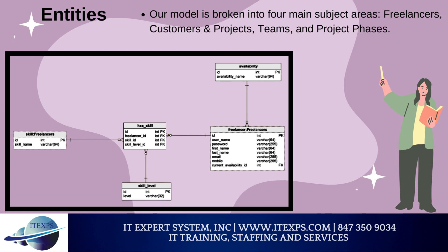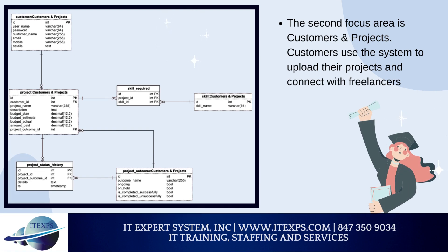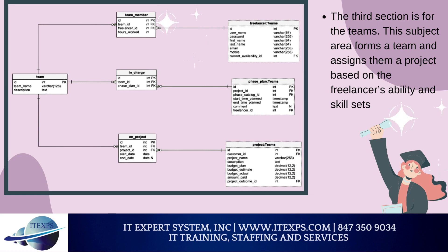The Freelancers section includes all the information provided by freelancers when they register to use the application. The relevant information includes the freelancers' skills, skill level, and skill sets. We also need to understand the freelancers' availability to be sure that they can deliver an assigned project. The second focus area is Customers and Projects. Customers use the system to upload their projects and connect with freelancers. This section includes the Customer, Project, Project Status History, Skill, and Project Outcome tables. Customers have registered to use the application, and the system extracts their details from a special form. Project details are revealed when the client posts a project. The third section is for the teams, which forms a team and assigns them a project based on the freelancers' ability and skill sets. The team is the major entity for this section.